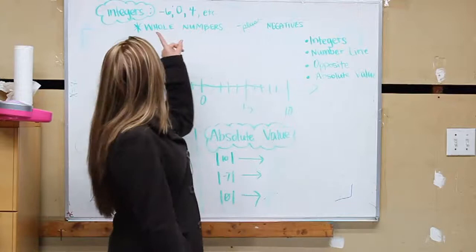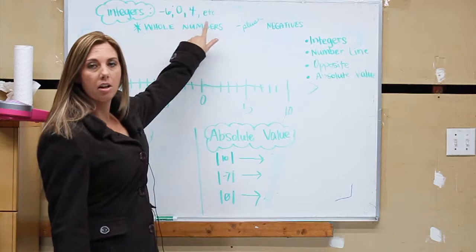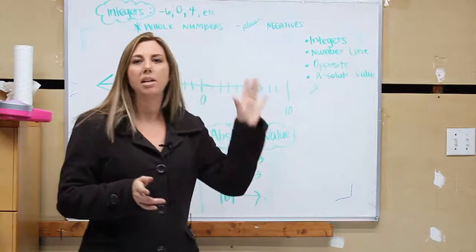Okay, so now it's time to learn about integers. Integers are all the negative numbers and zero and all the positive numbers. Basically, it's what we talked about right before - whole numbers plus the negative numbers. That's the definition of integers.